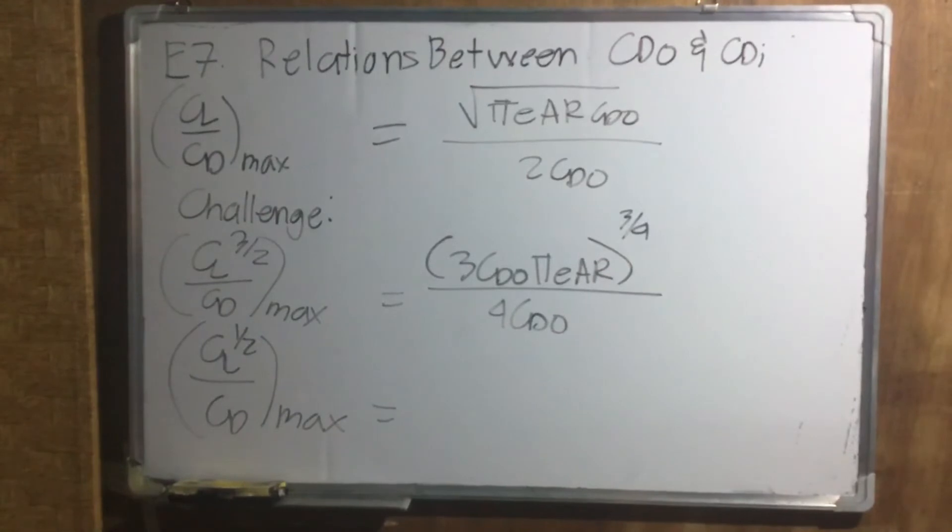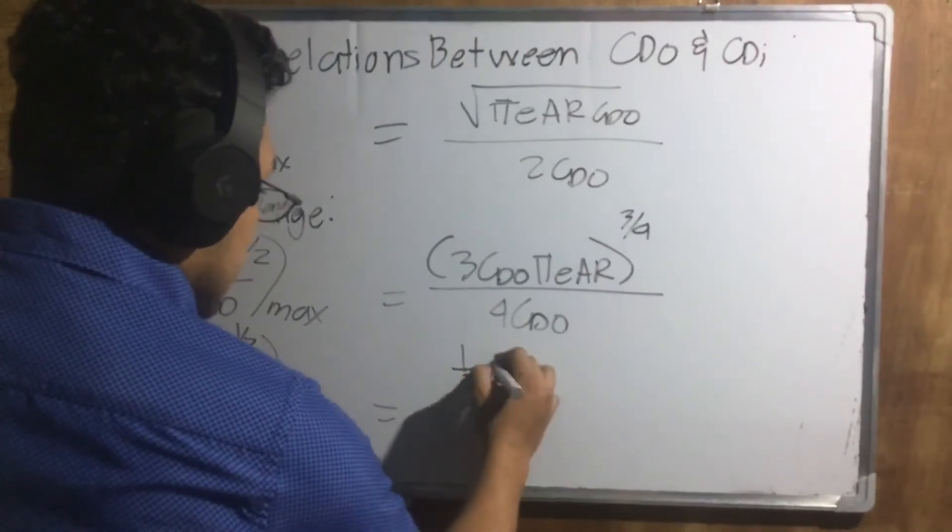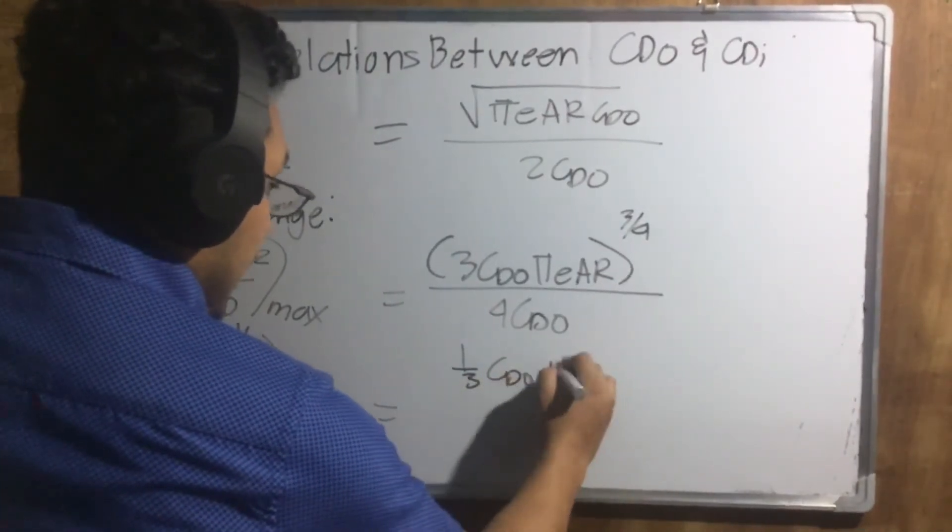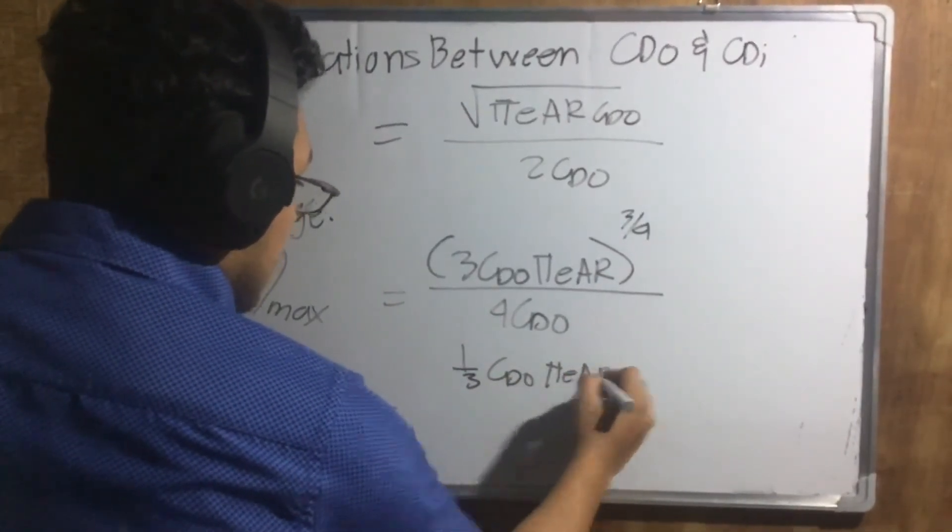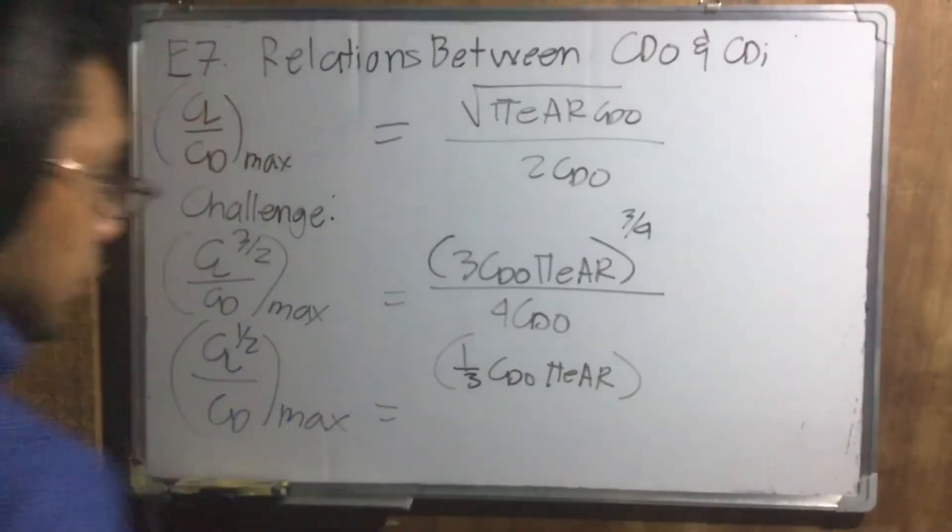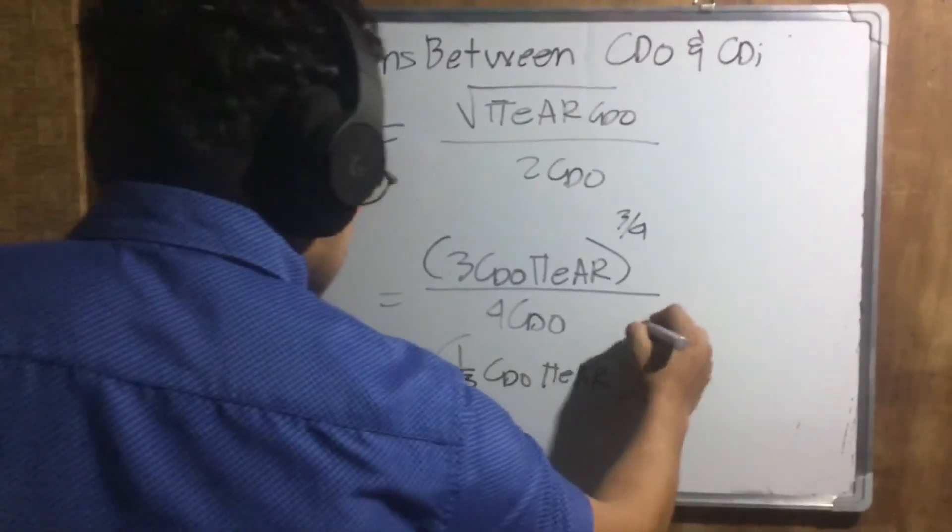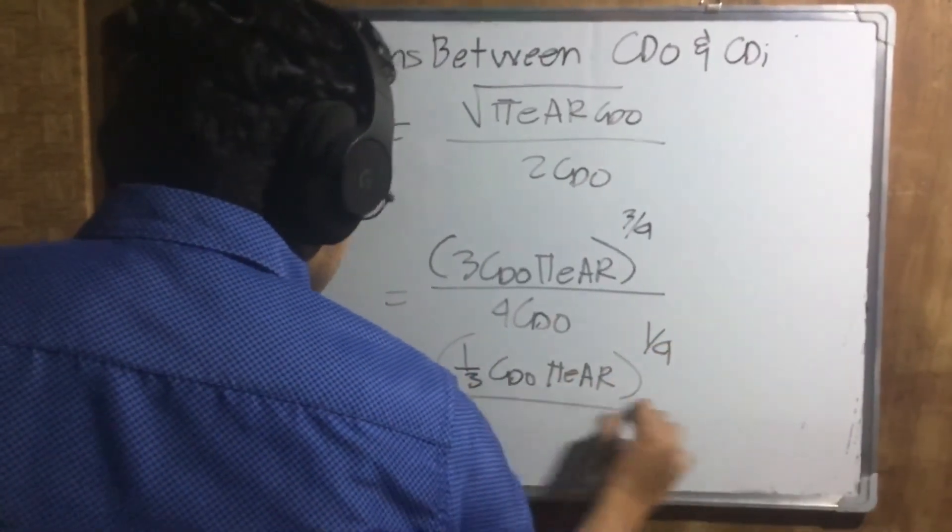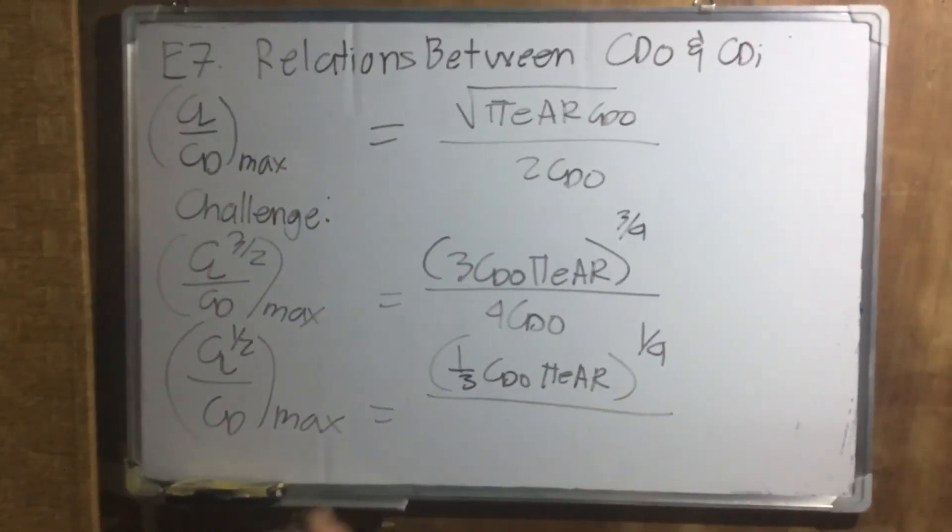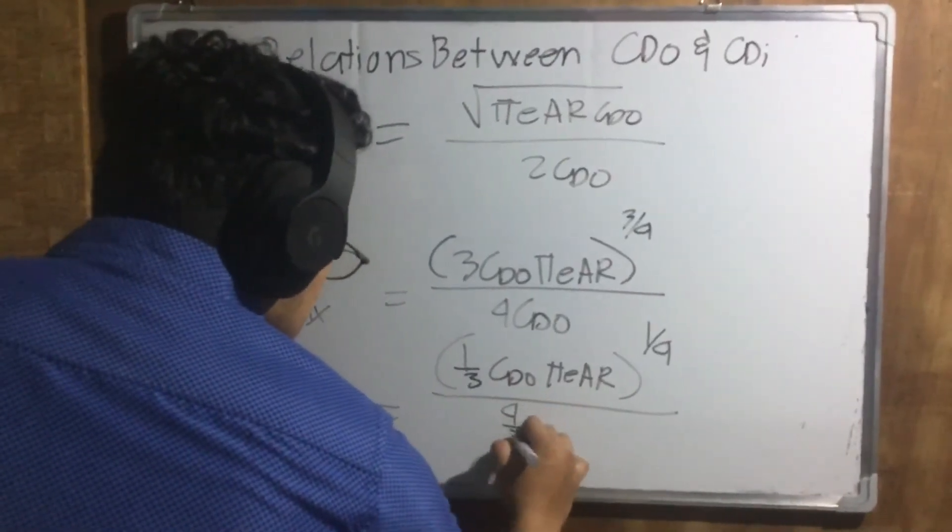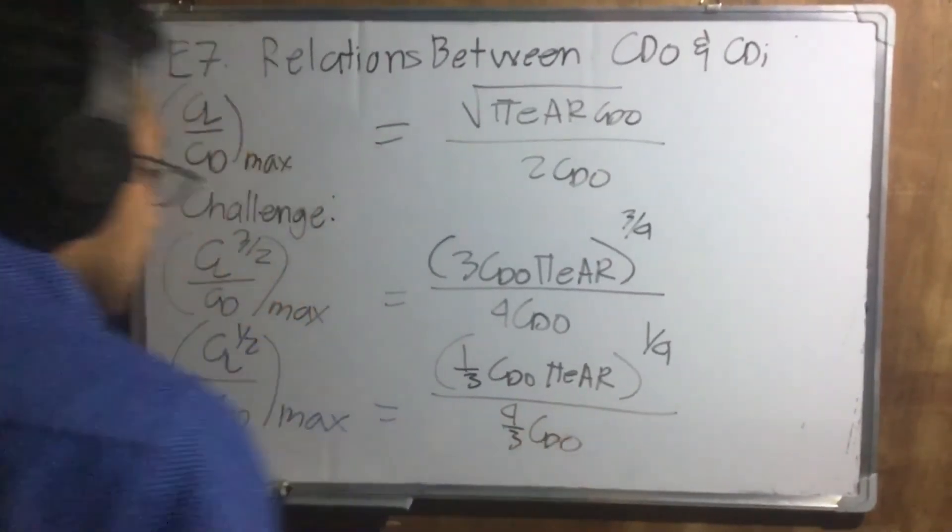Then, for CL one half over CD max, it will be equal to one third CDO pi E AR raised to one fourth over four thirds CDO.